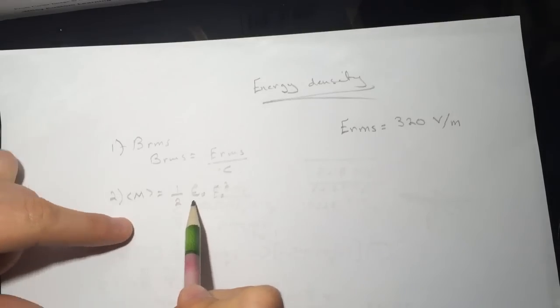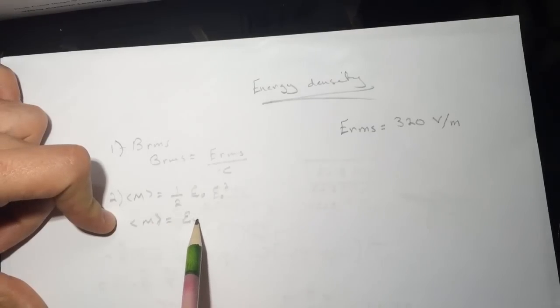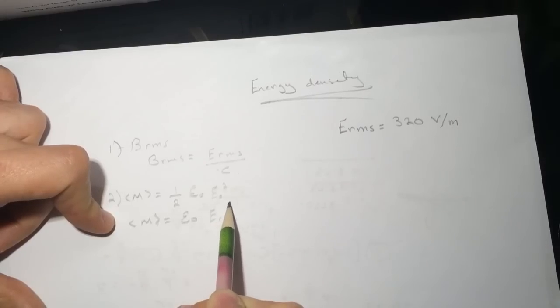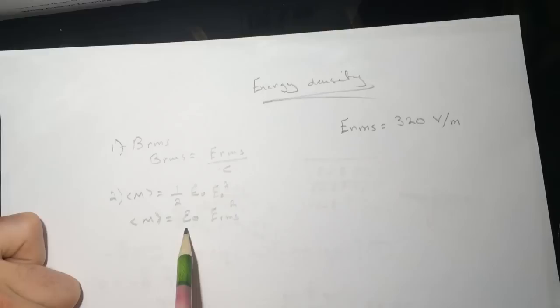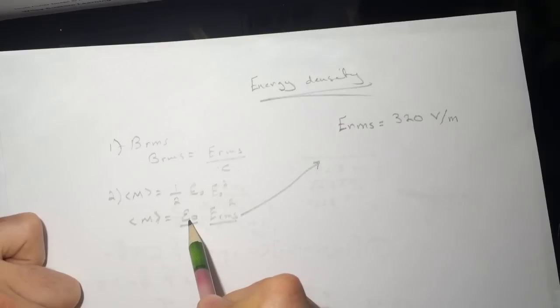If we want to write this again, we'll do it like this: equal epsilon naught E_RMS squared. So we know this, this RMS is here just squared, and then times the epsilon naught.